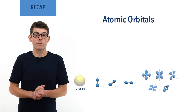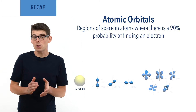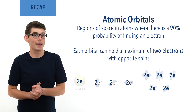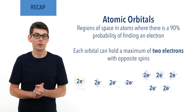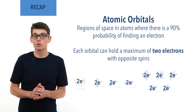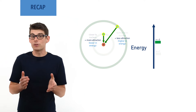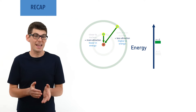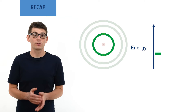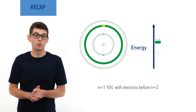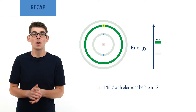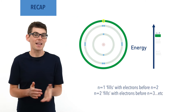Atomic orbitals are regions of space where, if occupied, there is a 90% probability of finding an electron. Each atomic orbital can hold a maximum of two electrons — one pair. Electrons are negatively charged and repel each other, meaning only a limited number of orbitals can fit around a nucleus in a given energy level. Electrons in energy levels closer to the nucleus are lower in energy and more stable. As a result, orbitals in the first energy level (n=1) will fill before orbitals in the second energy level (n=2), and orbitals in n=2 will be occupied before those in n=3.